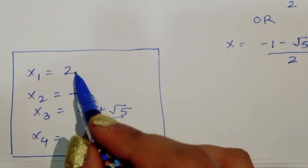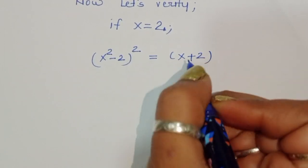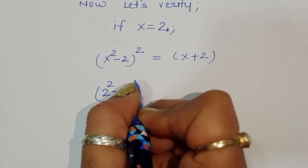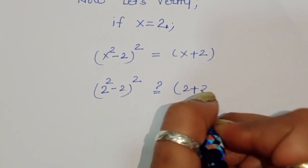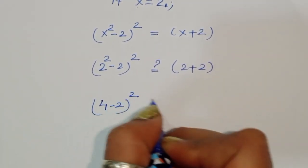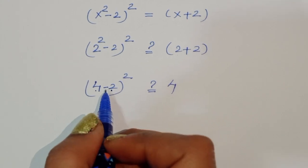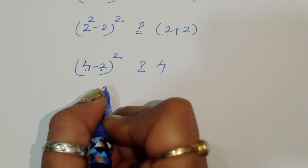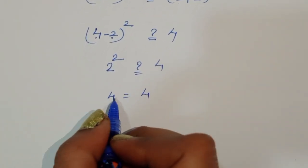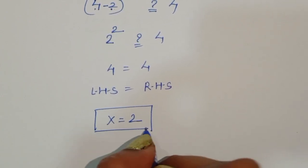Now let's verify for x₁ = 2. The equation is (x² - 2)² = x + 2. Substituting x = 2: (2² - 2)² = 2 + 2, so (4 - 2)² = 4, which gives 2² = 4, and 4 = 4. LHS equals RHS, so x = 2 is confirmed correct. Thank you.